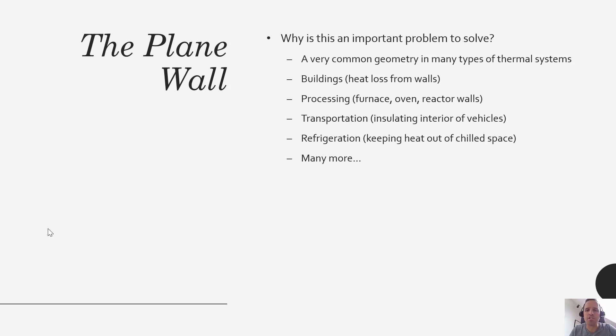This is actually a really common geometry in many different types of thermal systems. Buildings have walls, processing industries have walls—furnaces, ovens, reactors—the transportation industry, airplanes or automobiles, they have walls that we need to figure out how heat is getting in or out of those systems, and certainly refrigeration.